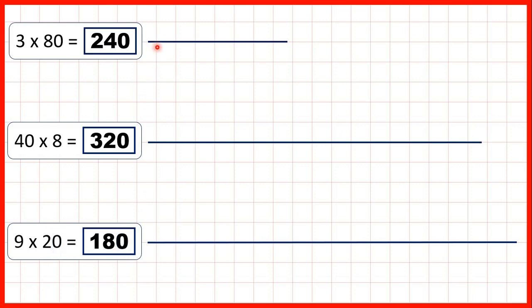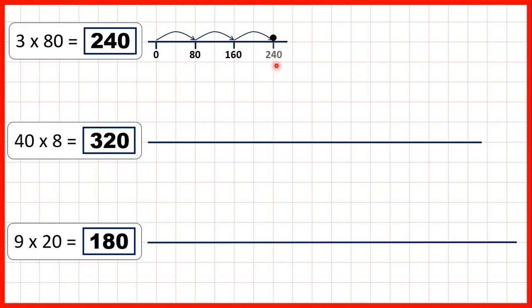Now on a number line, for 3 times 80, we can show 3 jumps of 80. So we have 80, 160, 240.